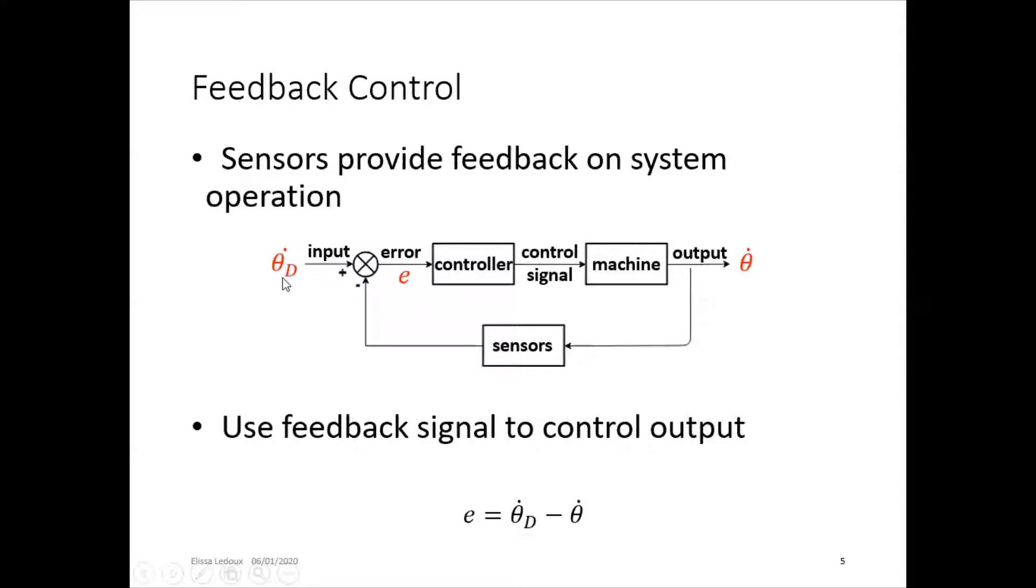And then the error signal, which is the desired speed minus the actual speed. So error is desired minus actual. So you subtract the input from the output, that's the error, and the controller can work on the error.